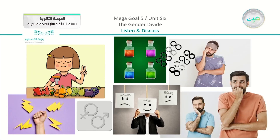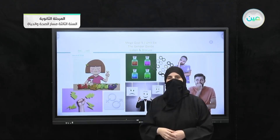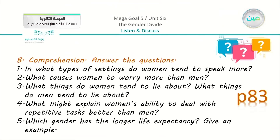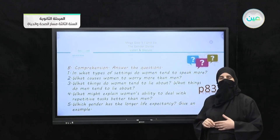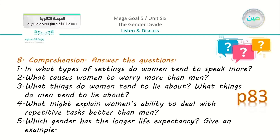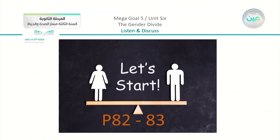We have a quick look at the pictures: symbols for each gender, a child eating fruit and vegetables, and a fist showing power. Moving on, we will go through the comprehension questions on page number 83. We are going to answer these questions while passing through the discussion, starting on pages 82 and 83 in your book.